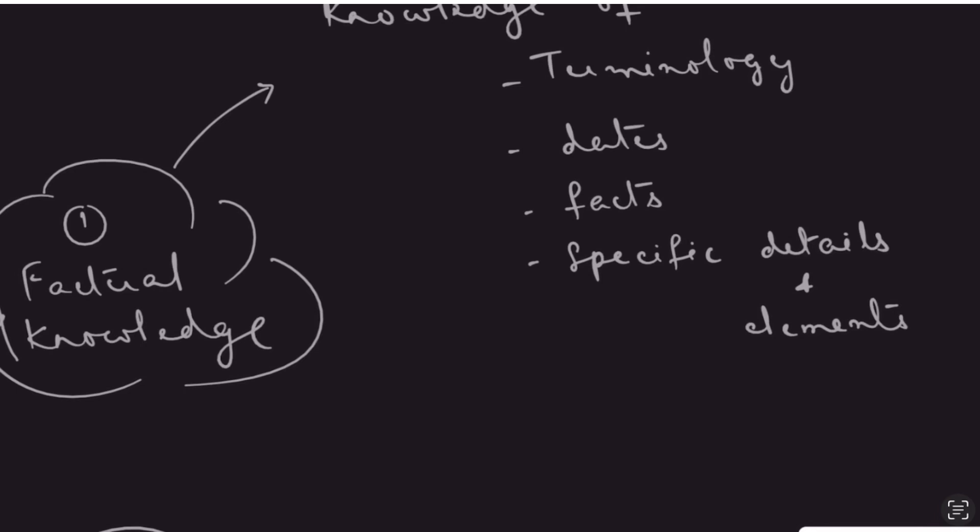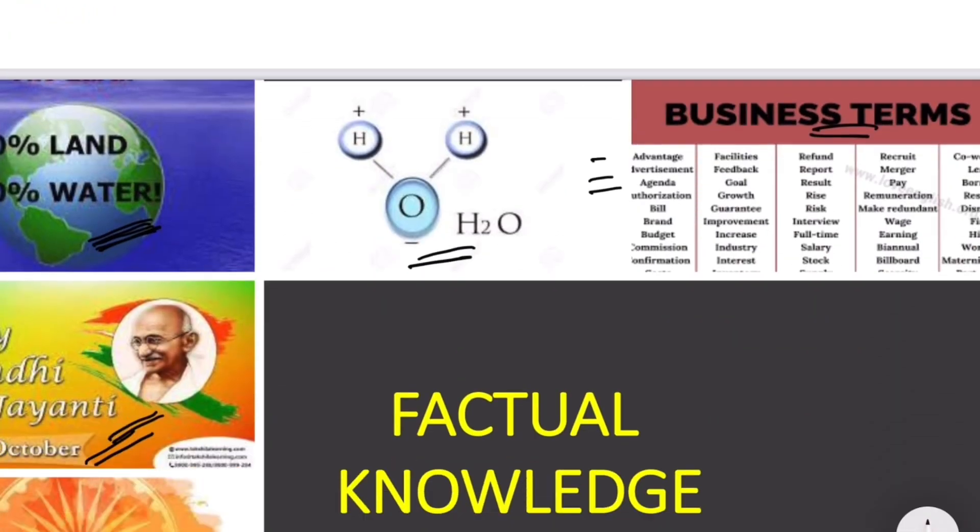The first one is factual knowledge. Factual knowledge is the foundation for higher order thinking skills because this is the basic information needed to understand the topic on which we can build higher order thinking skills. Factual knowledge can be knowledge of terminology, dates, facts, specific details and elements.